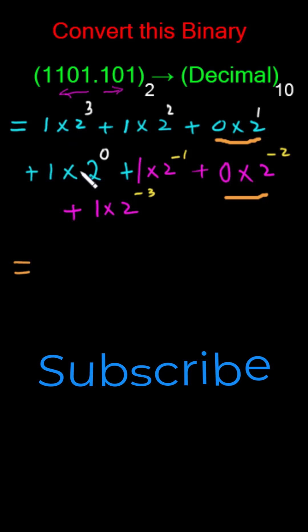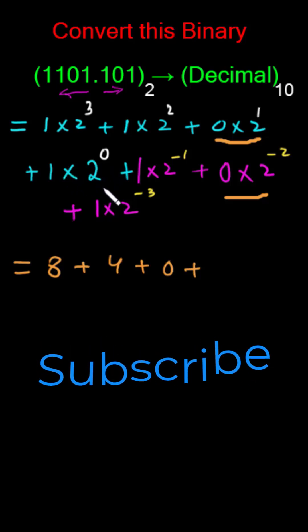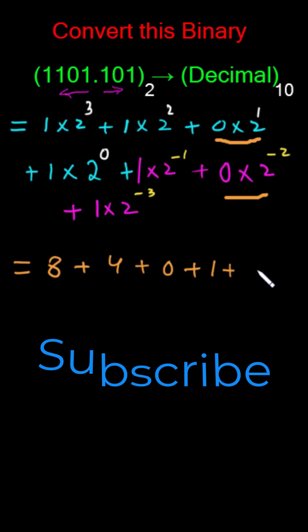So 1 times 2 to the power 3 is equal to 8, plus 1 times 2 squared is equal to 4, plus this one will give us 0 or you can skip, and this 1 times anything to the power 0 is equal to 1. So 1 times 1 will be 1.